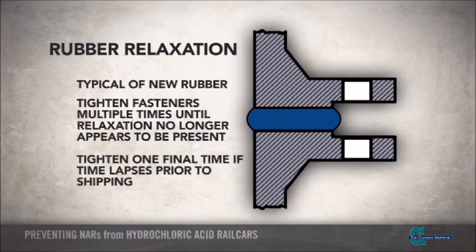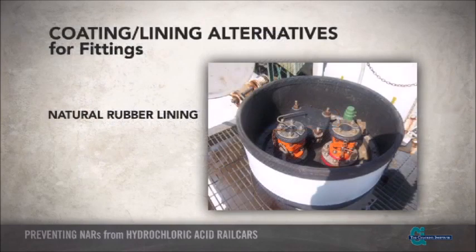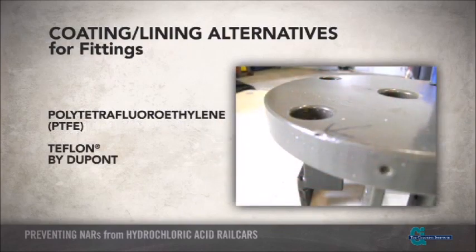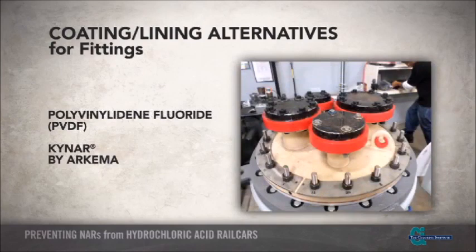To address the issue of rubber creep, suppliers have developed alternative materials that can be used to coat and line fitting surfaces. Materials currently being tested include ultra-high molecular weight polyethylene, or UHMWPE, flange faces; polytetrafluoroethylene, or PTFE, coating — a well-known PTFE product is Teflon by DuPont; and polyvinylidene fluoride, or PVDF, coating — a well-known PVDF product is Kynar by Arkema.